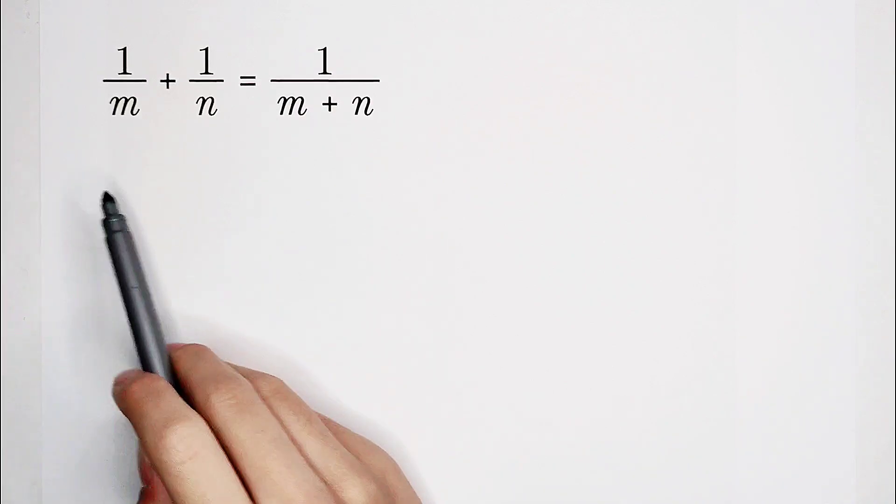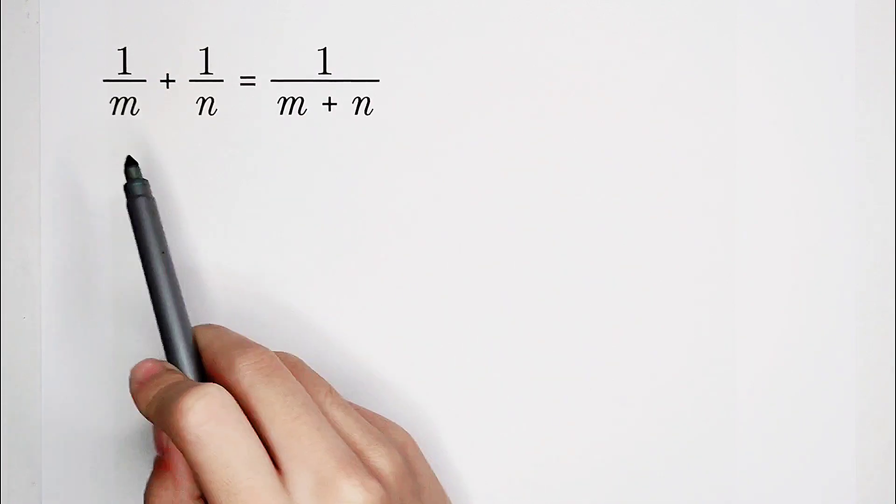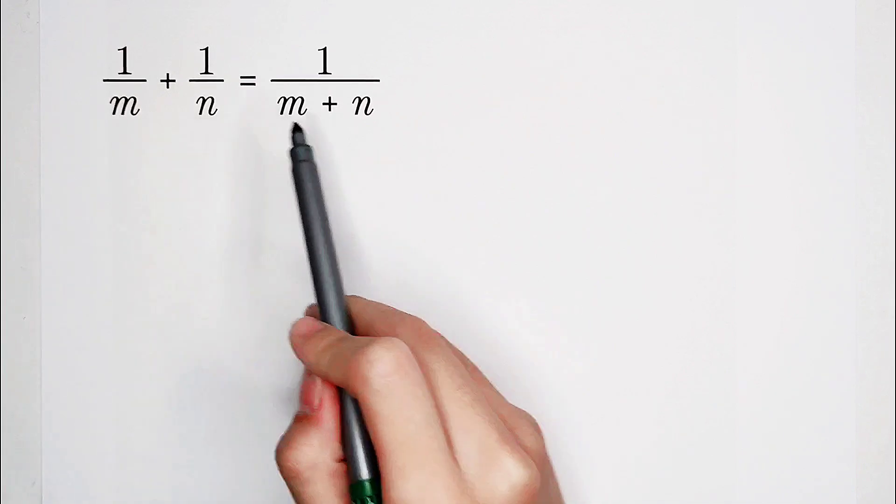Welcome to Math Window. Solve this equation about m and n: 1 over m plus 1 over n is equal to 1 over m plus n.